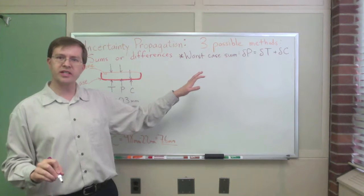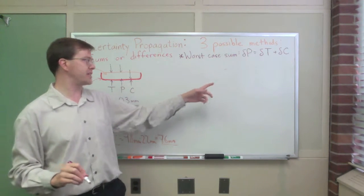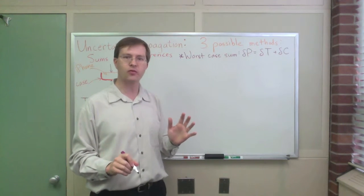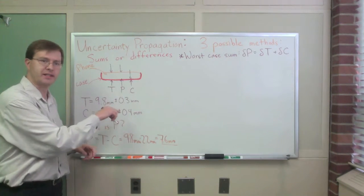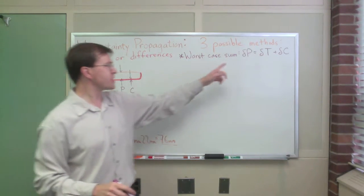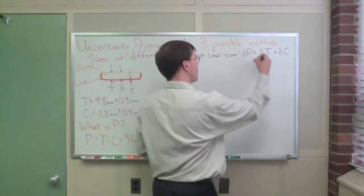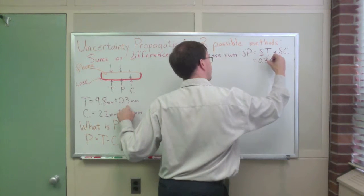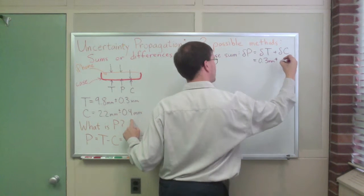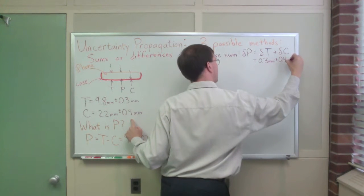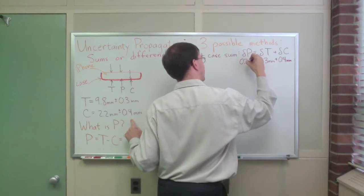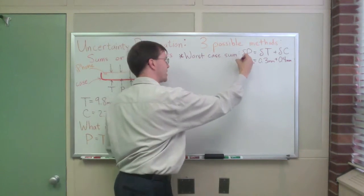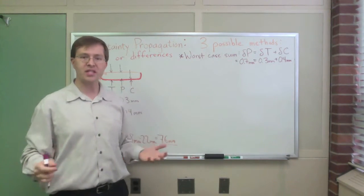Let me point out, remember that uncertainties are always expressed as positive quantities. Each one of these, delta p, delta t, delta c, each one of those is an intrinsically positive quantity because it's thought of as a plus or minus. So that's the assumption here. So the sum here, there's never any subtraction. These are always going to add. So in particular, delta t, my uncertainty in the phone thickness was 0.3 millimeters plus uncertainty in the case, 0.4 millimeters. That would give me 0.7 millimeters as the uncertainty in my phone thickness. So that's the worst case sum.